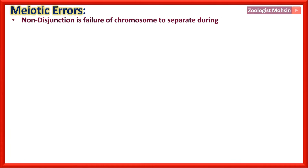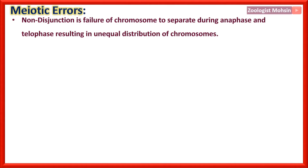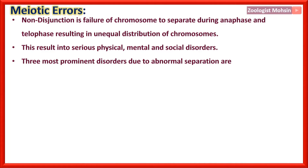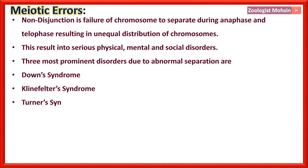Meiotic errors. Non-disjunction is the failure of chromosomes to separate during anaphase and telophase, resulting in unequal distribution of chromosomes. Junction means joint; disjunction is the opening of that joint; non-disjunction is the improper opening or separation. This results in serious physical, mental, and social disorders. The three most prominent disorders are Down syndrome, Klinefelter syndrome, and Turner syndrome.